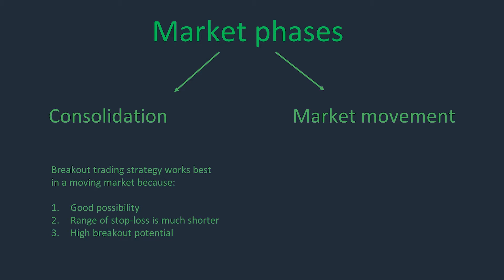There are two phases of the market: consolidation — otherwise called flat — and the breaking of consolidation, which is movement. Breakout trading strategy works best in a movement market because the first reason is good possibility, the second reason is the stop loss range is much shorter, and the third reason is high breakout potential.